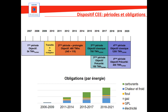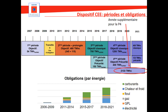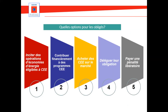Il y avait les différentes périodes avec la chronologie. En période 4, il y a eu une année supplémentaire accordée par le ministère, à iso-obligation. On était à 1 600 TWh QMAC, maintenant on est à 2 133 TWh QMAC. La période 4 s'achève fin 2021. Les options des obligés sont : proposer et inciter à faire des opérations d'économie d'énergie, contribuer financièrement à des programmes, acheter des C2E sur le marché, déléguer leur obligation, ou payer une pénalité libératoire à la fin de période.